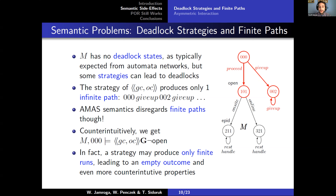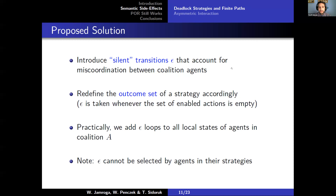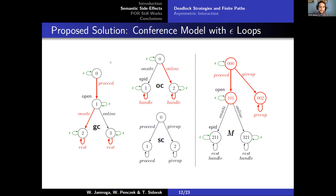This is, of course, a problem and we use a fairly standard solution to mitigate it. Namely, we introduce silent epsilon transitions that will account for this particular possibility of miscoordination between agents, and we redefine outcome sets accordingly so that they are taken whenever agents in the coalition miscoordinate. Practically, what this amounts to is adding epsilon loops to all local states of coalition agents. As a result, the path we were discussing earlier is now no longer finite — each such path is effectively appended with an infinite epsilon suffix — so it can now be considered in the outcome sets, and the previously holding counter-intuitive property is no longer true under the new semantics.